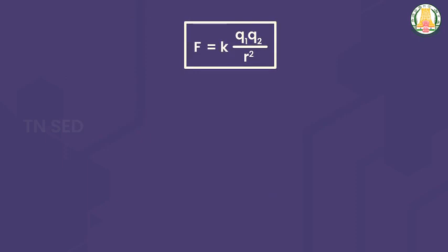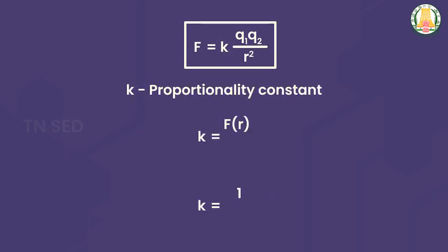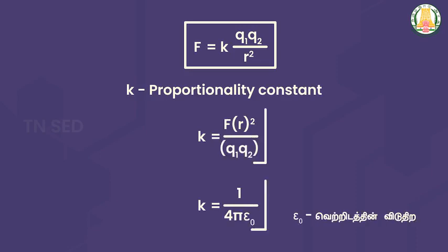Here, K is equal to 1 / (4πε₀), which is 9 × 10⁹ N·m² per coulomb squared. For example, you have one charge of +2 microcoulombs and another charge of −2 microcoulombs, and the two charges are separated by 3 meters. How much force is there?